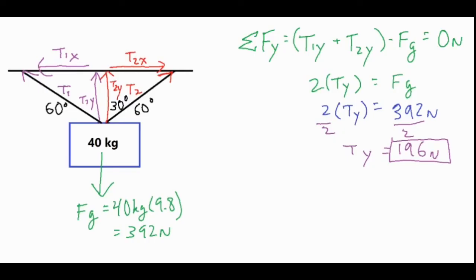I'm going to use that 30 degree angle. I want T2, which is the hypotenuse, and I have this component which is my adjacent side. So cosine of 30 degrees equals the adjacent, which is the Ty side, divided by the hypotenuse, which is the T2 side.